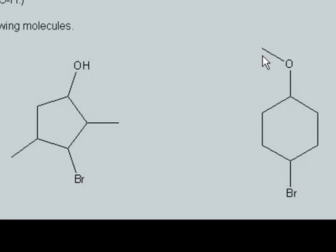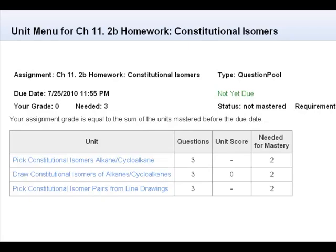Now I'll do some examples in OWL. I'll do a couple problems in this unit here, from 11B in OWL: draw constitutional isomers of alkanes and cycloalkanes.